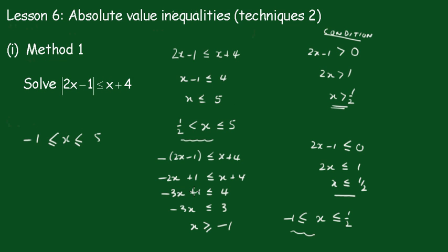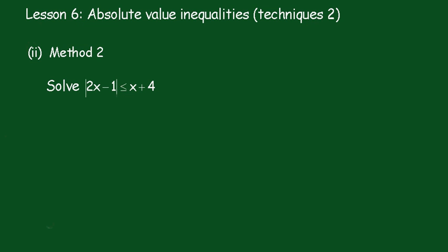All right, the second method is a graphical method and it's actually my preferred method because you can actually see what's going on. I'm going to let y1 equal the absolute value of 2x minus 1 and y2 equal x plus 4. I mean you could get this function name like function x and gx if you like, but I prefer the y1 to the y2.